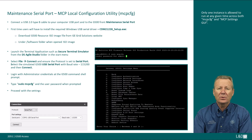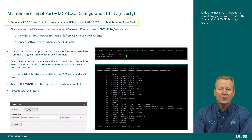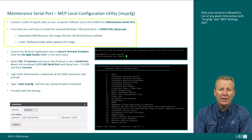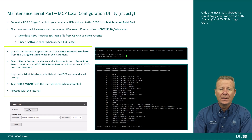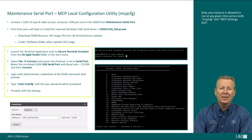The MCP Gateway local configuration utility can be launched locally via the front USB console port. Connect the USB 2 type B cable to your computer USB port and to the G500 front maintenance serial port. First-time users will have to install the required Windows USB serial driver, cdm21228-setup.exe. You can download the G500 resource ISO image from the GE Grid Solutions website and find the driver under the software folder when opening the ISO image. Launch a terminal application such as Secure Terminal Emulator from the DS Agile Studio folder in the Start menu. Select File, Connect, and ensure the protocol is set to Serial Port. Select the G500 user serial port with baud rate 115200 and connect. Log in with administrator credentials, type sudo mcpcfg and enter the user password when prompted, then proceed with the settings.